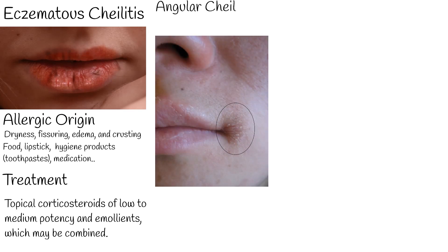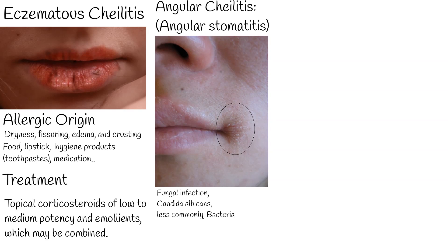Angular cheilitis, also known as angular stomatitis, manifests as a roughly triangular area of erythema and edema at one, or more frequently both, angles of the mouth. The most common cause of angular cheilitis in adults is a fungal infection, Candida albicans, and less commonly Staphylococcus aureus. For treatment, antifungal medication or antibiotics are used.